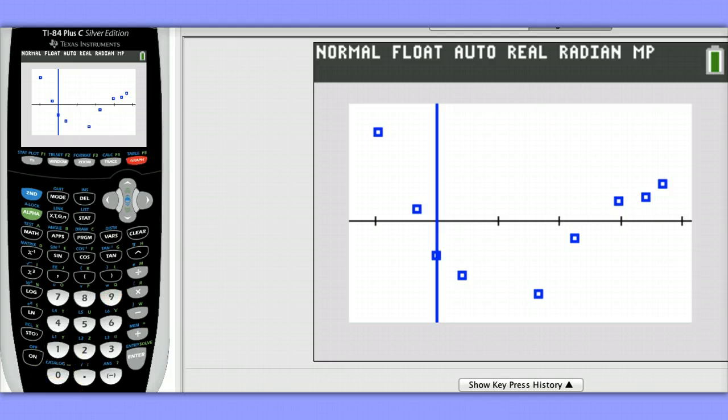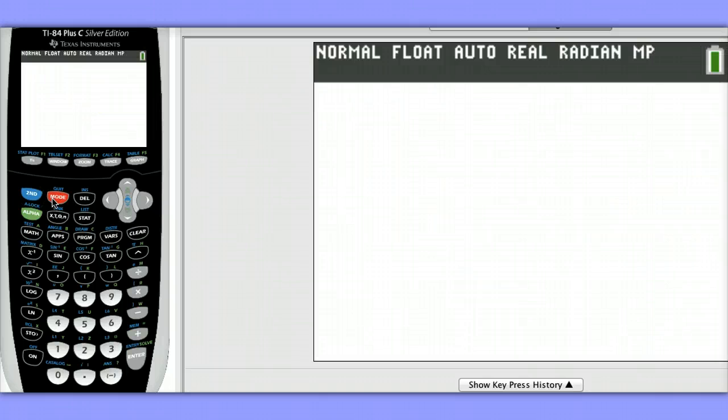Finally, let's use our regression equation to predict the period of revolution of Eris, whose average distance from the sun is 102.15 astronomical units. Begin by hitting 2nd, Mode, to get back to the home screen. Then, we're going to take the natural log of 102.15. Remember, we transformed both the Y and X values when we came up with our linear model.